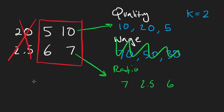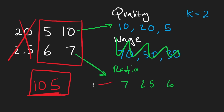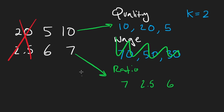So seven times 15 is going to be 105. Whatever value we have by the end of this, we're always going to be computing the minimum wage we could pay out.